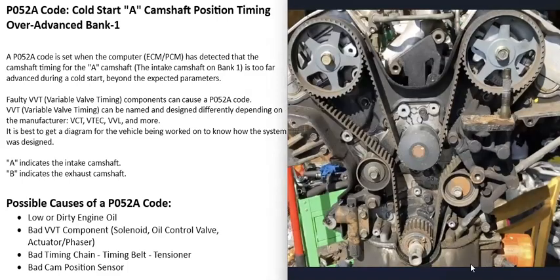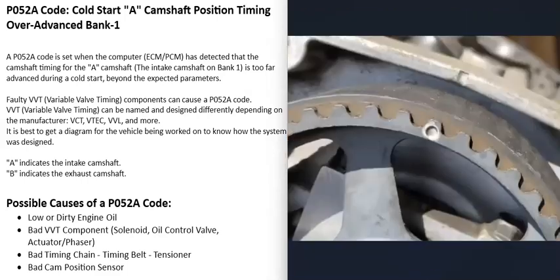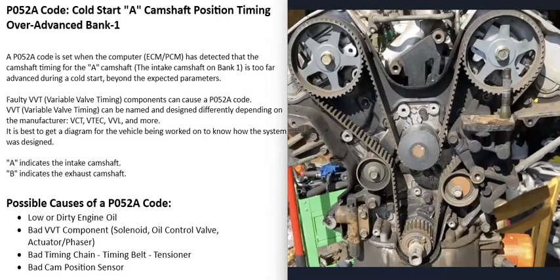Another possible cause is a bad timing chain or timing belt, or possibly a worn tensioner. A timing chain or belt has timing marks that all need to line up correctly. If the belt or chain slips even a little — slightly before or after — that throws everything off and causes issues. Also, when timing chains and belts get old they can become stretched, which can intermittently throw things off just enough to set a code.